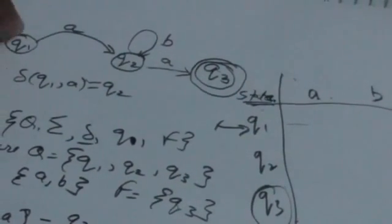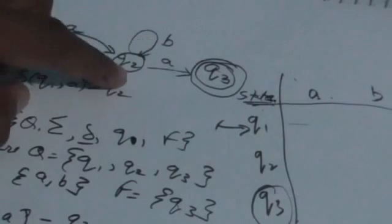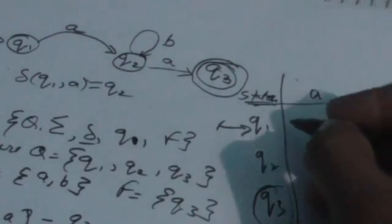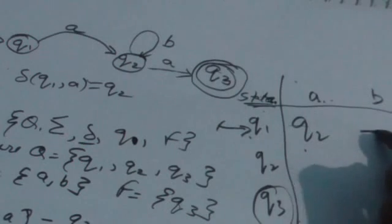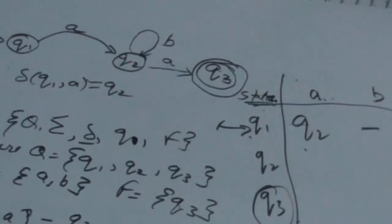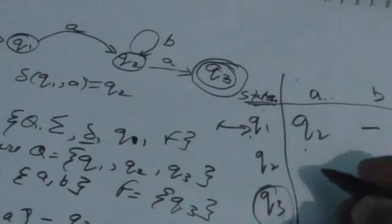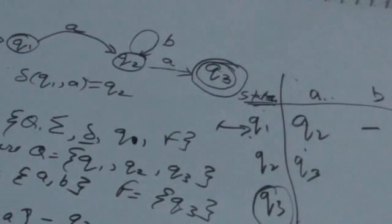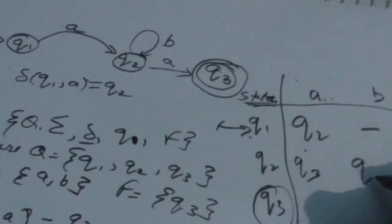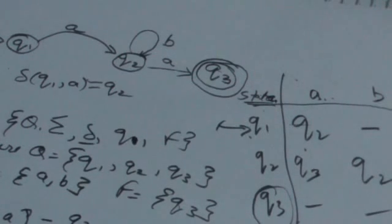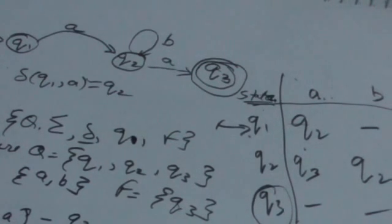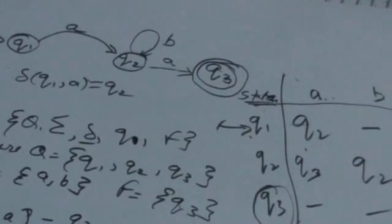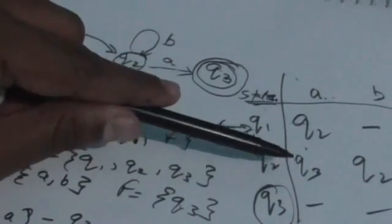Write the transitions of these states. The entry of each cell is the next state. For row Q1 and column A, the machine is in state Q1 and reads input symbol A — it jumps to Q2, so we write Q2. There is no transition for input symbol B. For Q2 reading A it jumps to Q3, reading B it remains in Q2. There are no transitions for final state Q3. So we can represent a finite automata in three ways: graphical, mathematical, and tabular form.